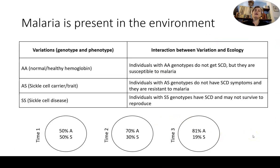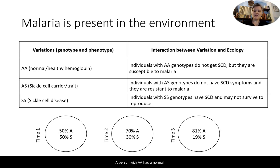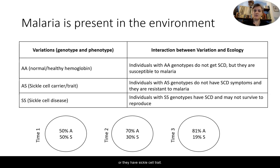Let's start off with the top. In this situation, malaria is present in the environment. We have variations of genotype and phenotype. The three variations are AA, AS, and SS. The person with AA has normal healthy hemoglobin. AS is that heterozygous genotype where they're a sickle cell carrier or they have sickle cell trait. And then finally, we have the homozygous recessive SS, which is sickle cell disease.